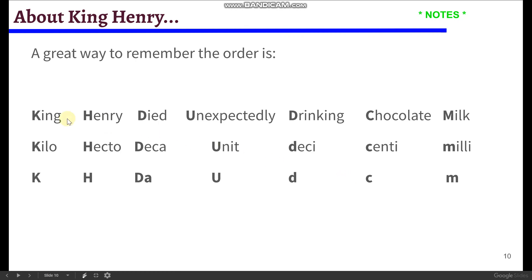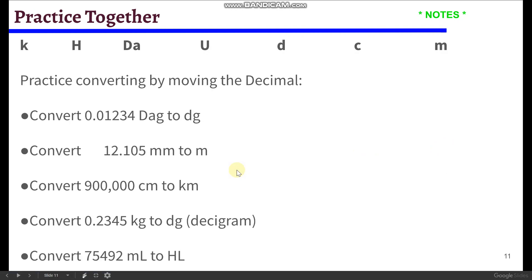So a great way to remember the order is using this mnemonic device. A mnemonic device is just like a phrase that will help you remember something. So the mnemonic device is King Henry died unexpectedly drinking chocolate milk. Kilo, hecta, decca, unit, deci, centi, milli. Okay, so let's go through some examples of how we convert with the metric system.